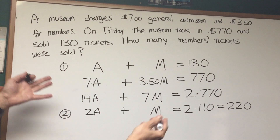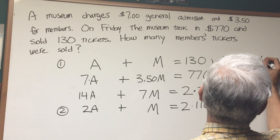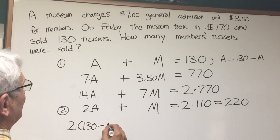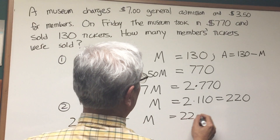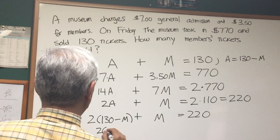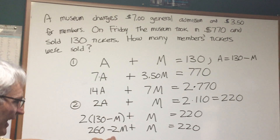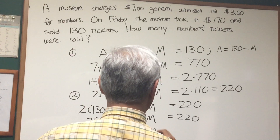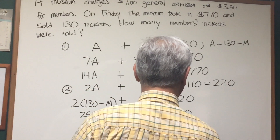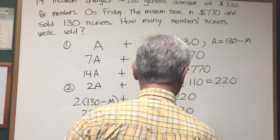We can solve by the method of substitution. From the first equation, A is equal to 130 minus M. We substitute that value for A into the second equation: 2 times (130 minus M) plus M equals 220. Applying the distributive law, we have 260 minus 2M plus M equals 220. Negative 2M plus M is negative M. Subtracting 260 from both sides gives negative M equals negative 40.